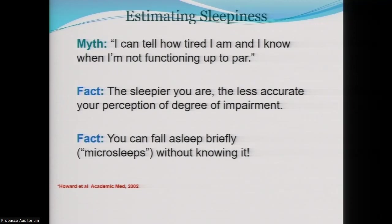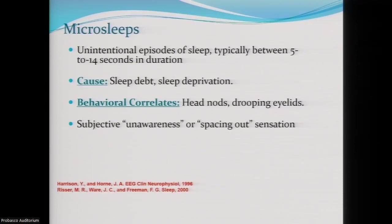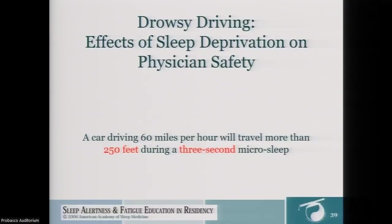You can also fall asleep briefly — called micro sleeps — without knowing it. That's what happens when you're sitting in a lecture trying to keep your eyes open and you blank out for a moment and think, 'What were they just talking about?' Micro sleeps are unintentional episodes of sleep, typically five to 14 seconds in duration, caused by sleep deprivation. Behavioral correlates include head nods, drooping eyelids, and spacing out. If you have a three-second micro sleep while driving at 60 miles per hour, your car will travel more than 250 feet. A lot of damage can be done in three seconds at 60 miles per hour.